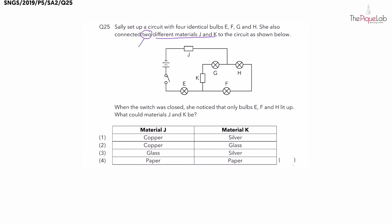These two different materials could either be electrical conductors or electrical insulators. I'm going to use symbol C for conductor and the symbol I for insulator.